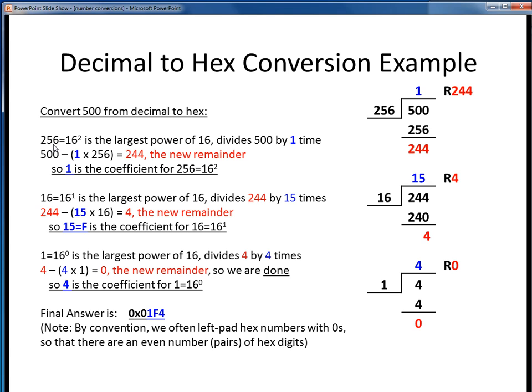So then we ask ourselves, how many times will 256 fit into 500? So if we do some standard division, we find it goes in one time with a remainder of 244. So this 1 is the coefficient for the 16 to the 2 term. Then we simply repeat the process.